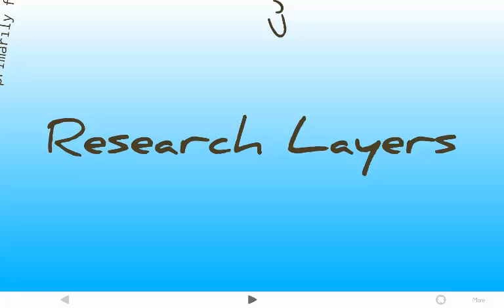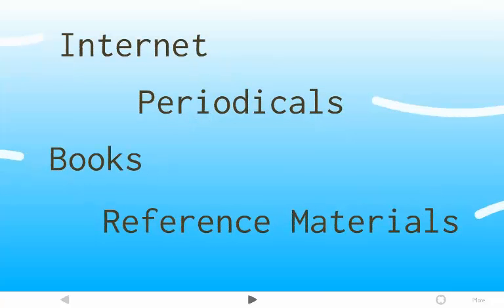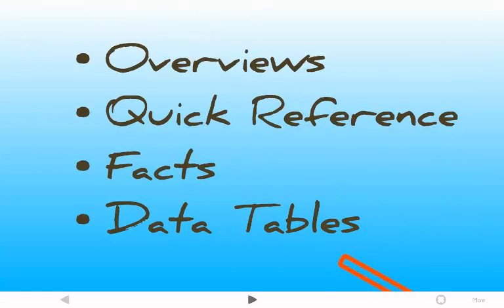So, research layers. Once we get started with some facets and notes and some ideas about a topic, you want to start on your research. There are different layers of research. Internet is at the top. Periodicals. Books. And reference materials. Your reference materials are going to be your foundation — your starting point. These are going to be overviews, quick references, facts, and data tables. A good place to start. You want to find out an overview of your topic; maybe you don't know a lot about it. Sometimes reference materials are also good to come back to at the end, once you've done more research, to get some data to support something else you found.